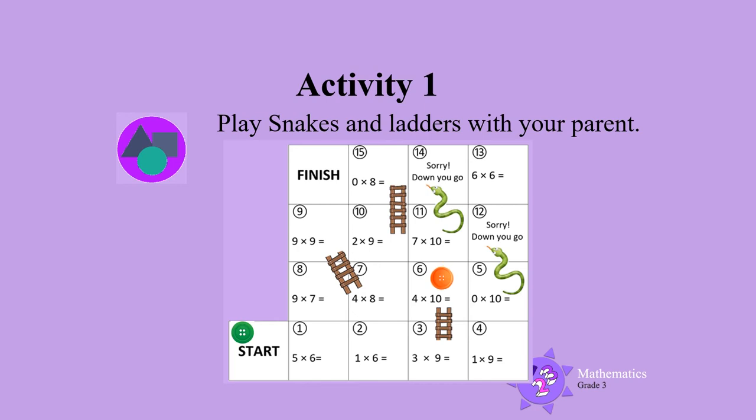Now, it's your parents' turn. Roll the dice. The dice lands on 5. Your parent must move their counter 5 spaces.